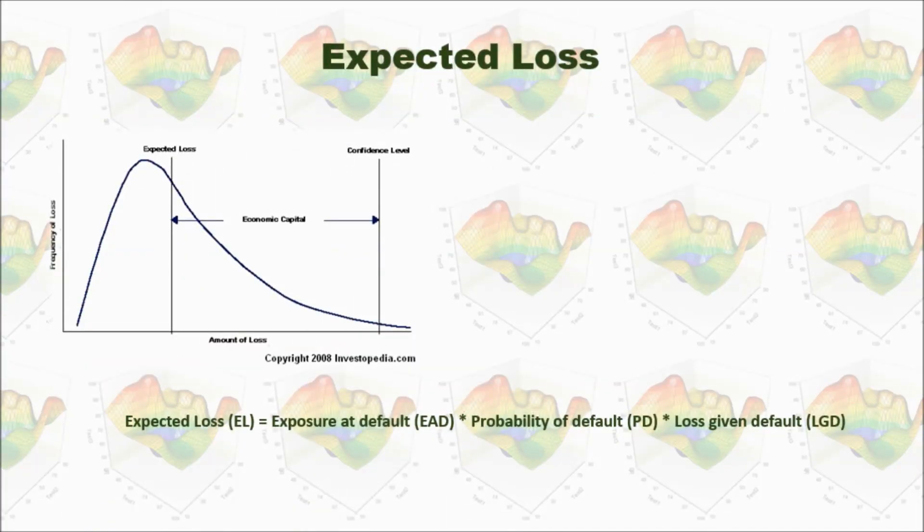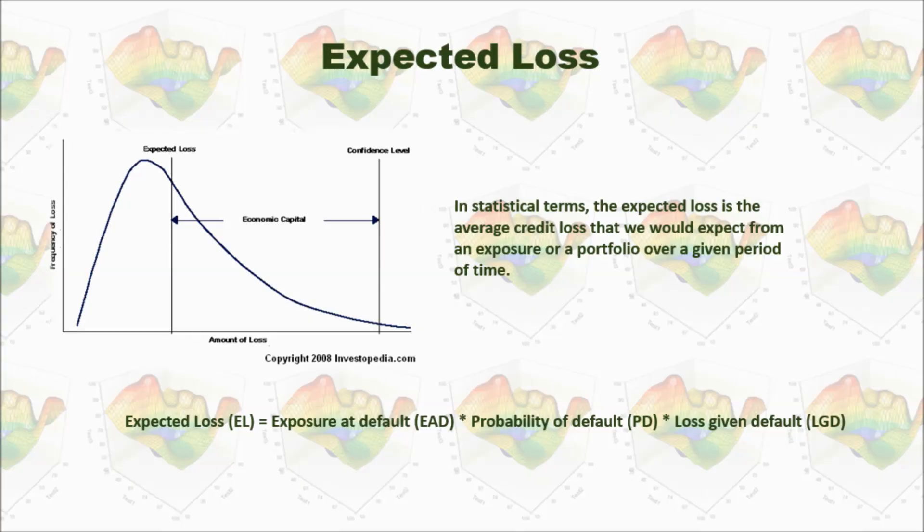So what is expected loss? The expected loss is the average credit loss that we would expect from exposure of our portfolio over a given period of time. See this graph. The expected loss is this part which shows the average credit loss.